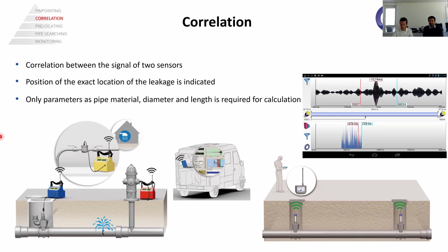The correlation result is always a distance, which tells you exactly the position of where the leak can be found, so you can excavate at that position and repair the damage. The correlator only needs parameters such as pipe material, diameter, and the length of the section in order to calculate the correct distance.